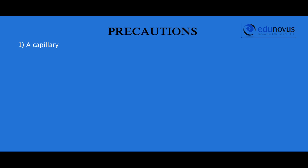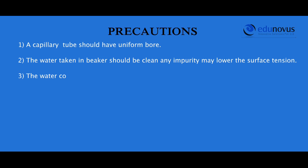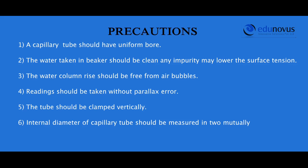Precautions: The capillary tube should have a uniform bore. The water in the beaker should be clean, as any impurity may lower the surface tension. The water column rise should be free from air bubbles. Readings should be taken without any parallax error. The tube should be clamped vertically. The internal diameter of the capillary tube should be measured in two mutually perpendicular directions.